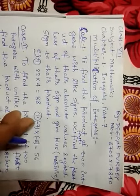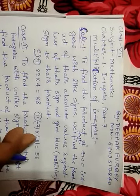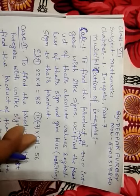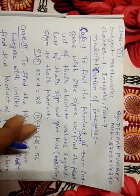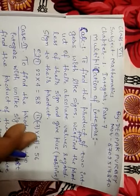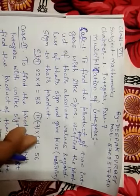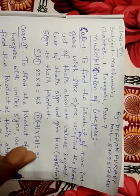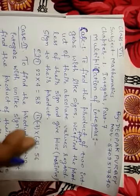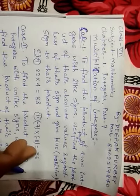Here also, both are the same sign. Both numbers are of same sign. So here also, we first find the product of their absolute values, that is 7 × 8, which is 56. And put before it the positive sign, plus sign.